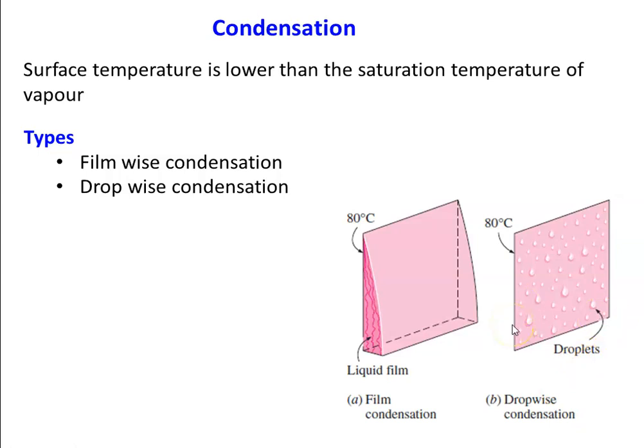If the liquid particles form a continuous film on the surface — so there is always a layer of water on the surface of the plate — this is called film-based condensation. When there are oil particles on the surface or the surface is highly polished, there is a possibility of droplets forming instead of a film. The drop-based condensation has a better heat transfer rate because more free surface is available for the incoming vapor to directly meet the surface and lose its heat energy.